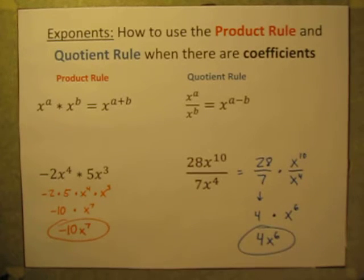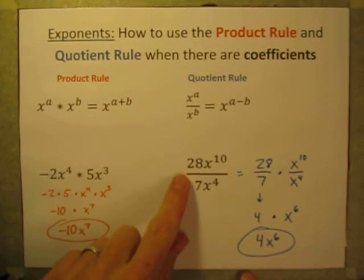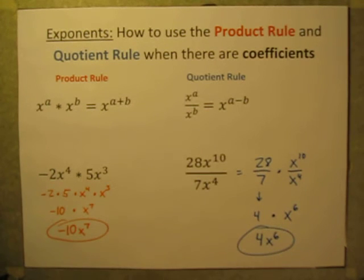So that's how you can use the product rule and the quotient rule when you also have some coefficients in there to deal with. You can just divide or multiply the numbers, then use the product rule and the quotient rule. And it makes simplifying things pretty easy.